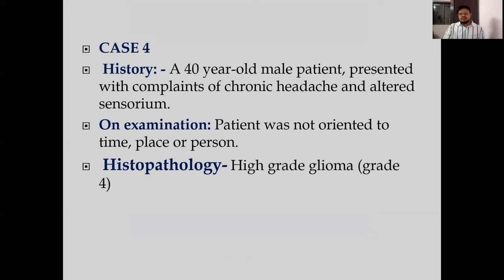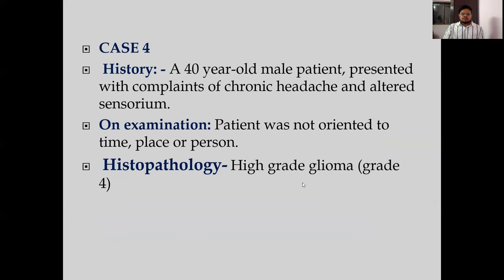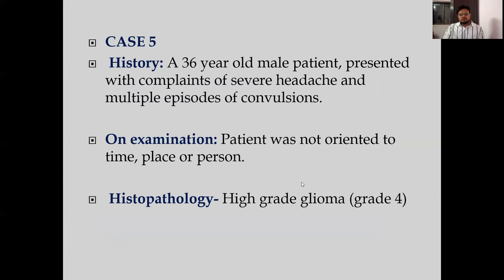Case 4: a 40-year-old male presented with chronic headache and altered sensorium. The patient was not oriented to time, place, or person on examination. Imaging revealed an ill-defined FLAIR hyperintense, focally-enhancing lesion involving the pons, upper half of the medulla oblongata, and bilateral cerebellar peduncles. Fractional anisotropy was reduced, and on tractography we can see there is complete infiltration of the white matter tracts running through it. Histopathology revealed it was a high-grade glioma, grade 4.